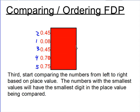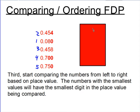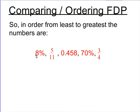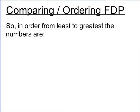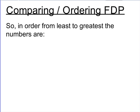Now that I have them in order, I just have to write them in order in their original form. Eight hundredths went first, five elevenths went second, then four hundred fifty-eight thousandths, seventy percent, and then three fourths. One important thing to do is keep track of which decimals match up with which numbers in original form — you need to do that or else you won't be able to write them in the right order.